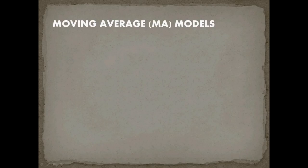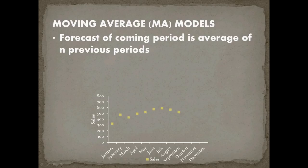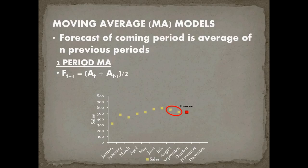Moving average models are one way to generate that forecast. What a moving average model does is predict the next period by taking an average of previous periods. If I want to forecast my sales in October, a two-period moving average model would average August and September. A note on notation: F sub T+1 is our forecast for the upcoming period, A sub T is the actual sales for the current period, and A sub T-1 was actual sales for the preceding month. This is really a weighted average where the weights are perfectly balanced — half of A sub T and half of A sub T-1.